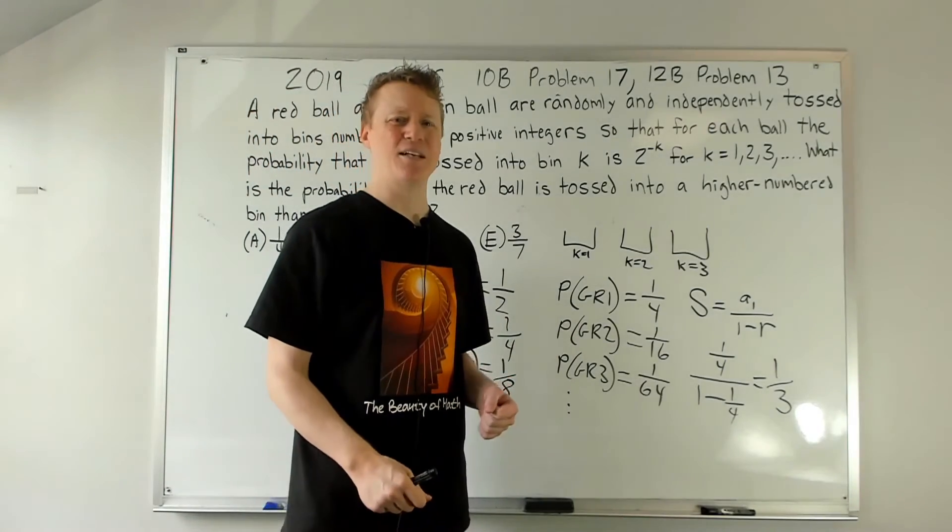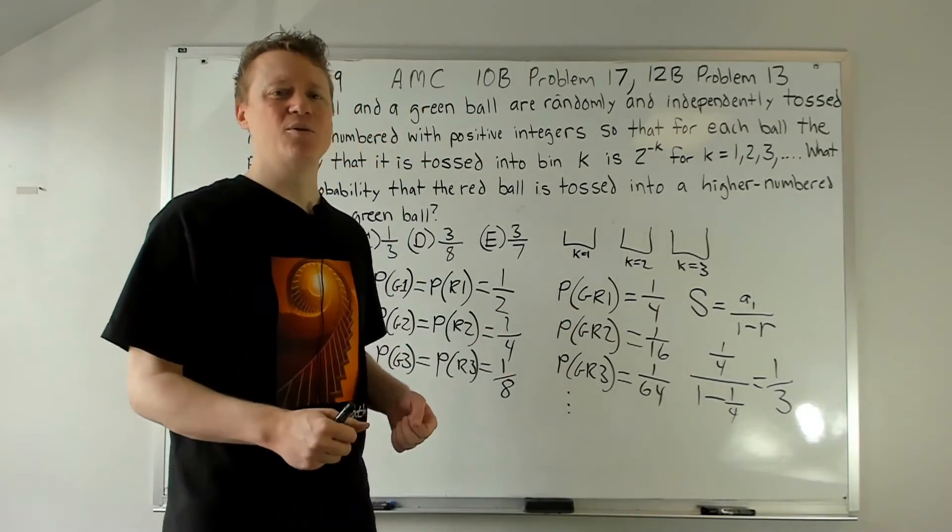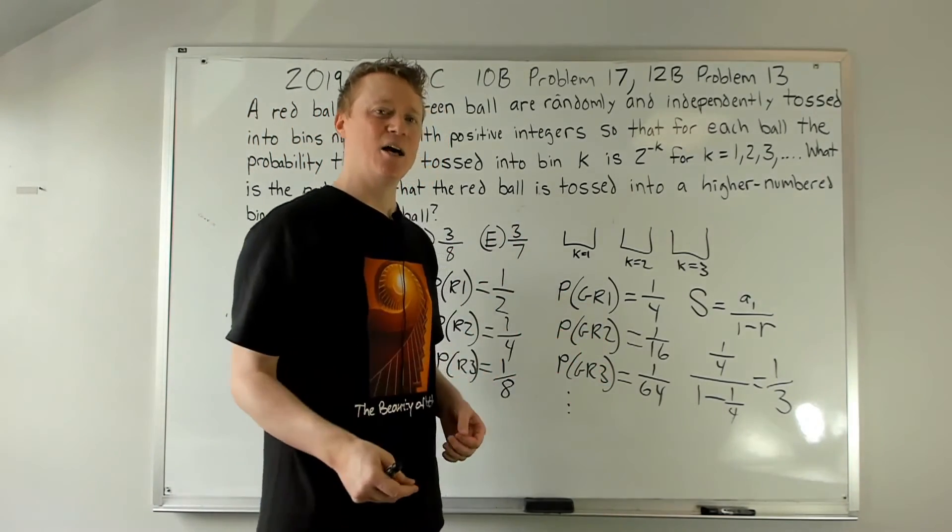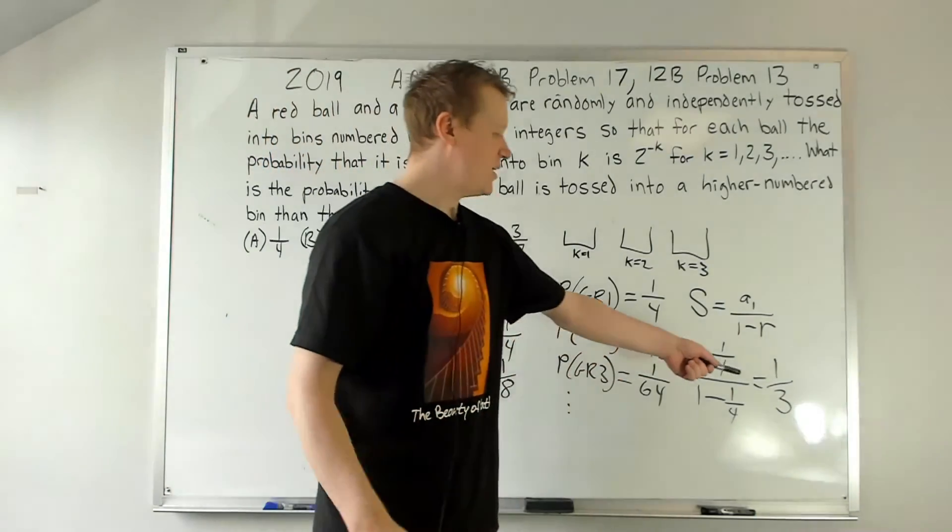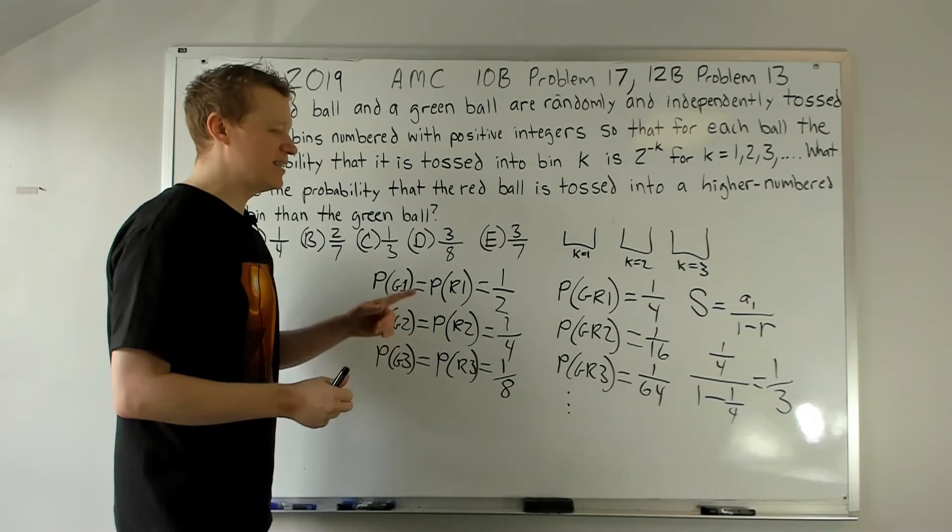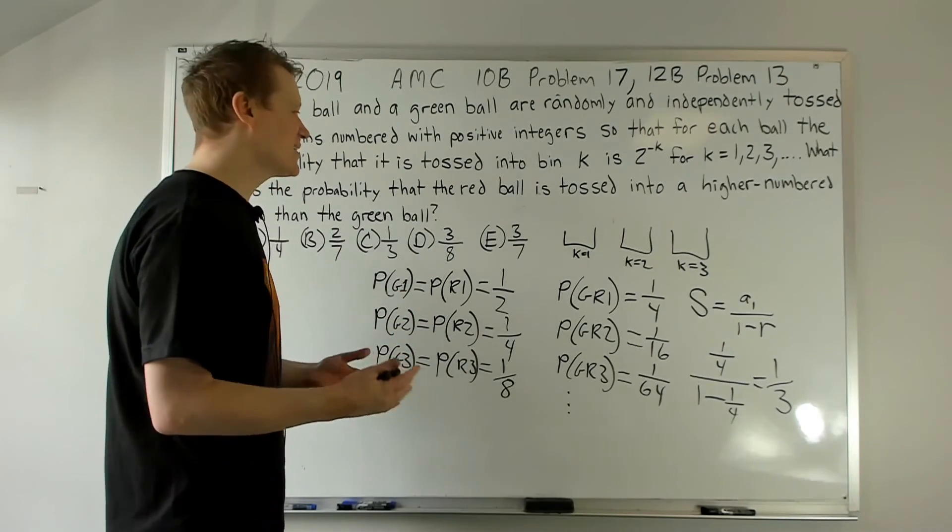And if it wasn't an infinite geometric series, how would you do it, right? So it's going to be complicated. You can kind of use that to say it probably is and help the process along. So if it's a one in three chance that both the red ball and the green ball land in the same bin, now let's think.